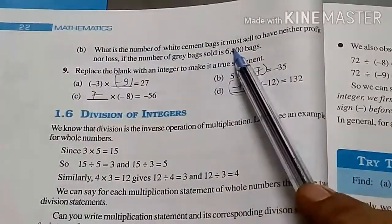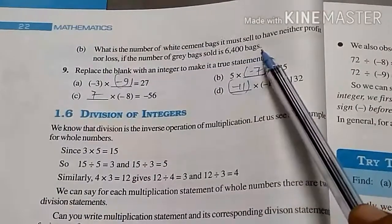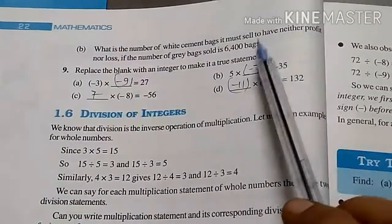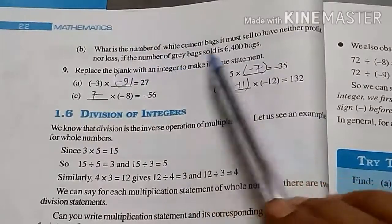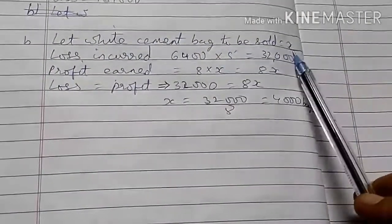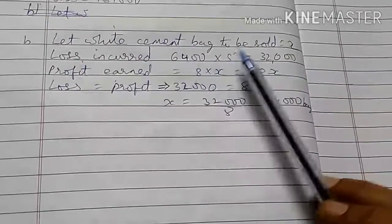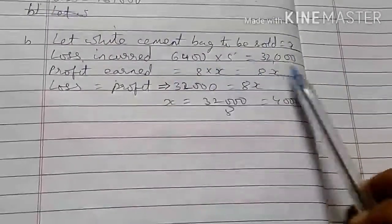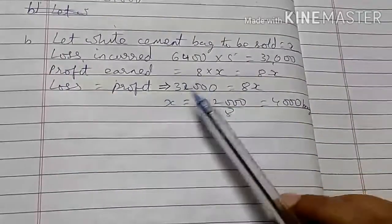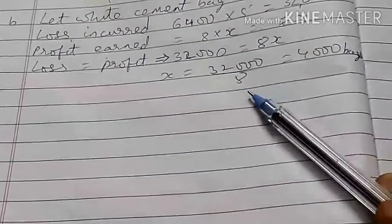Part B: What is the number of white cement bags the company must sell to have neither profit nor loss, if 6,400 grey bags are sold? Let white cement bags sold equal x. Loss from grey bags: 6,400 multiply 5 equals 32,000. Profit from white bags: 8 multiply x equals 8x. Setting loss equal to profit: 32,000 equals 8x, so x equals 32,000 divided by 8 equals 4,000 bags.